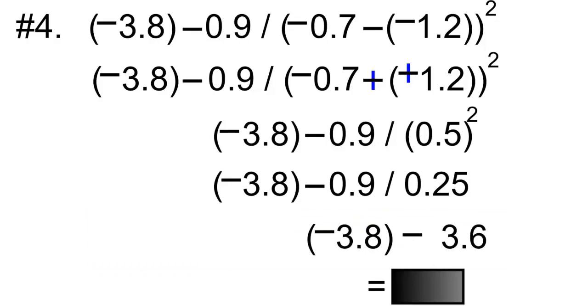Then step number four, addition and subtraction from left to right. Negative 3.8 minus 3.6. We'll change this to an addition equation. So negative 3.8 plus the opposite of 3.6, which is negative 3.6. And if you add negative 3.8 and negative 3.6 together, you have a final answer of negative 7.4. Thank you.